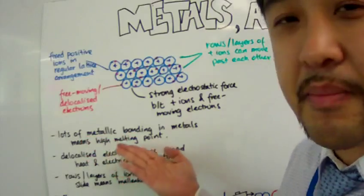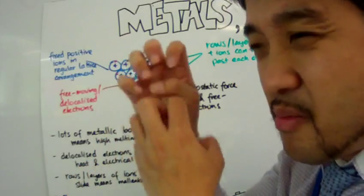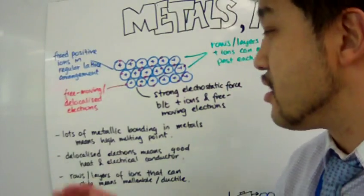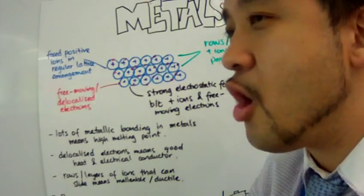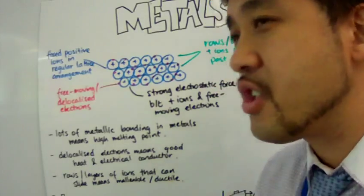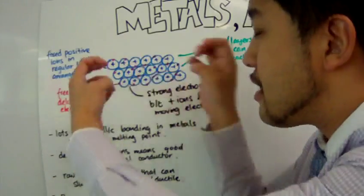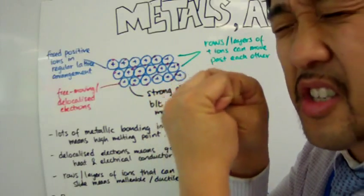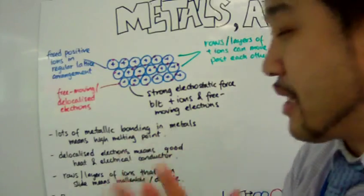These closely packed metallic forces, called metallic bonds, are not rigid — they can move about, and that's because of the delocalized electrons. This structure can help explain a whole slew of properties of metals. For example, it explains why metals are densely packed — because the positive ions are compact and pressed up against each other like a pack of sardines.